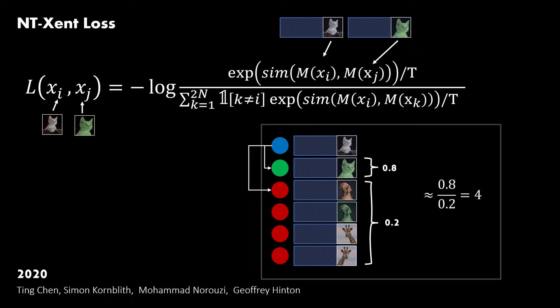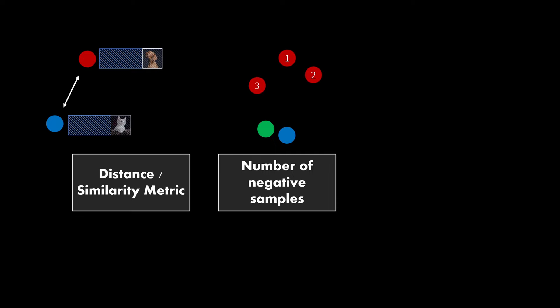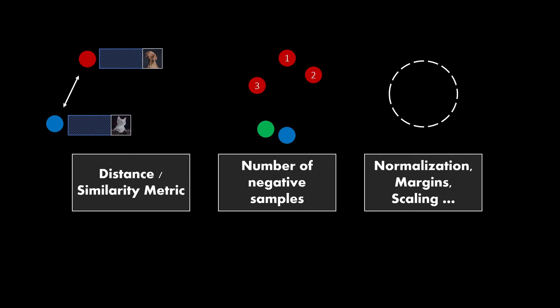That's the basic idea of this loss, and in addition the authors applied the softmax function to add some normalization and the log to soften the loss. Finally, the parameter T is called temperature and adds some scaling to the distances. To wrap this up, the variations between the loss functions are mainly the similarity measure that is used, the number of negative samples that are taken into account, and some tweaks like normalizations, margins, or scaling. The overall idea of instance discrimination is always the same.